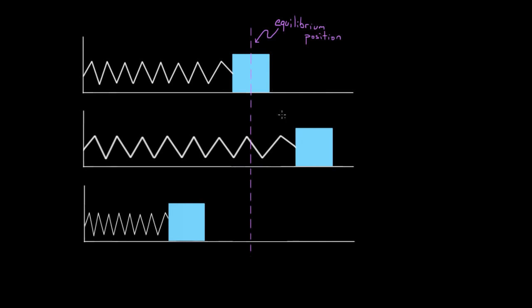We saw that for a mass oscillating on a spring, there's a certain amplitude — that's the maximum displacement from equilibrium — and also a certain period, which is the time it takes for this process to reset, or in other words, the time it takes for the mass to go through an entire cycle. But what do these things depend on? We know the definitions, but what determines them?